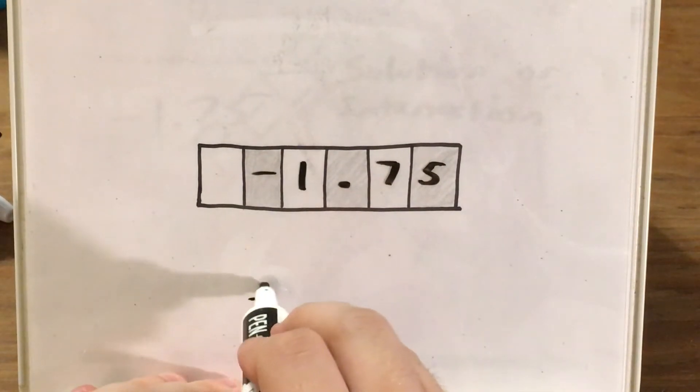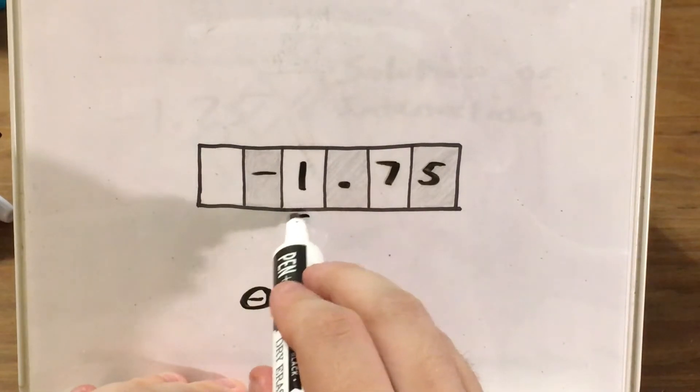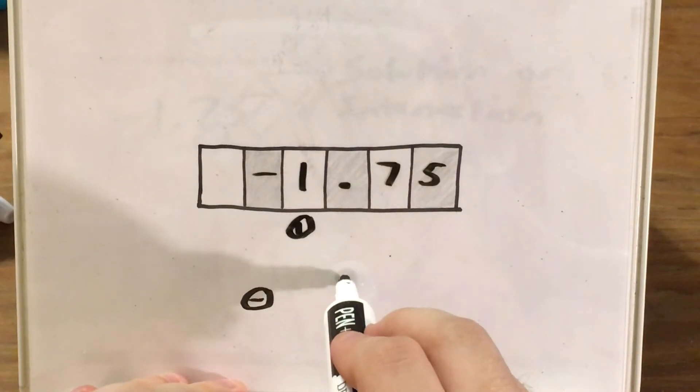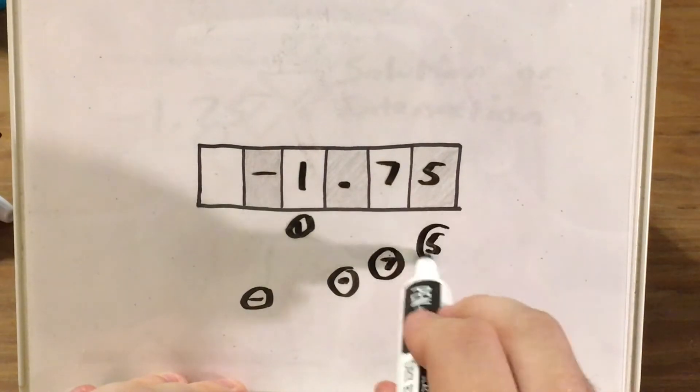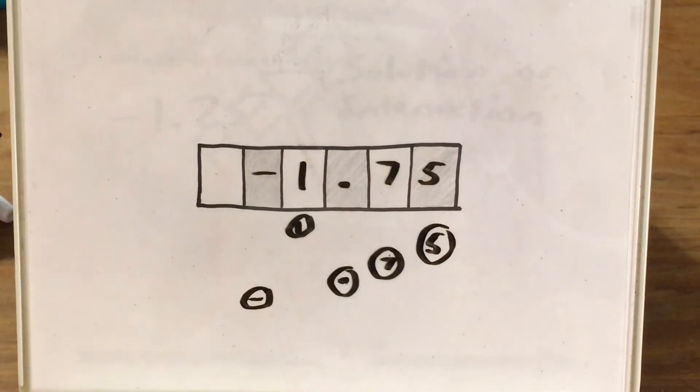And then underneath my negative sign, I find my negative sign bubble and bubble that in. I find my 1 bubble, I find my decimal point bubble, I find my 7 bubble, and I find my 5 bubble. So that is how we answer, both mathematically and in the gridded response part of this, a question like this, where we had to find a solution or an intersection.